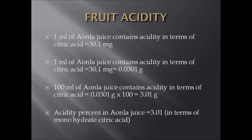Now we calculated for each ml of amla juice. Now we will calculate for 100 ml — grams per 100 ml. How many grams of citric acid is there for 100 ml of amla juice? Therefore, 100 ml of amla juice contains acidity in terms of citric acid equal to 0.0301 g into 100, that is equal to 3.01 g. Therefore, acidity percent in amla juice equals 3.01, in terms of monohydrate citric acid. In this way, we have to calculate acidity percent on a citric acid basis. Monohydrate form of citric acid basis, we are calculating acidity in terms of percentage. Acidity percent of amla juice equals 3.01, meaning 3.01 g of monohydrate citric acid is present for each 100 ml of amla juice.